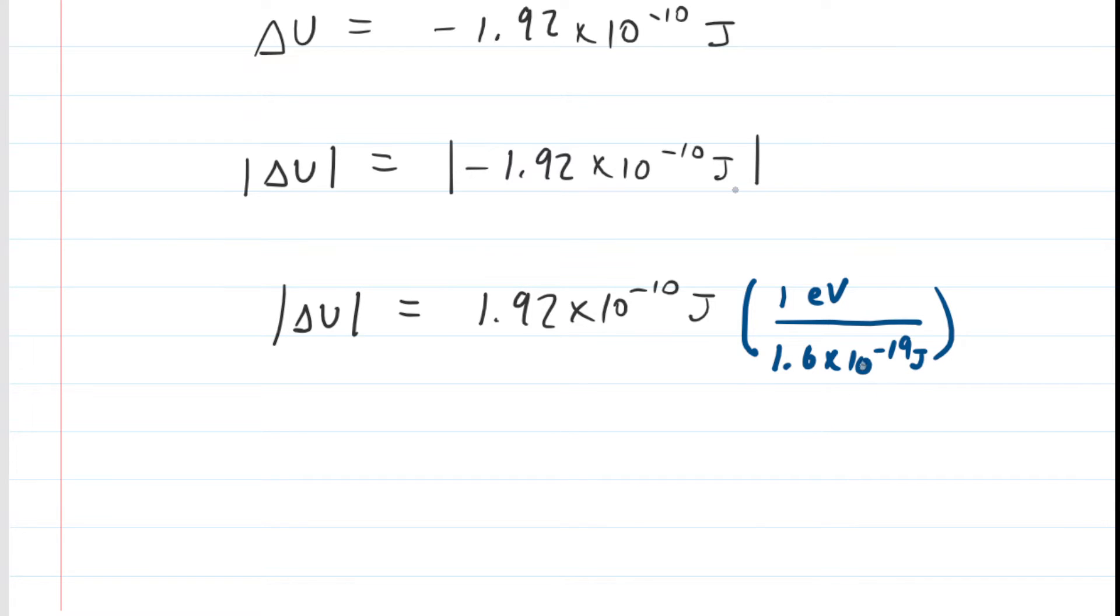So let's go ahead and compute it. When we multiply by the conversion factor, the joules will cancel out, leaving us with electron volts. And computing this value, we now get about 1.2 times 10 to the power of 9. That will be in electron volts.